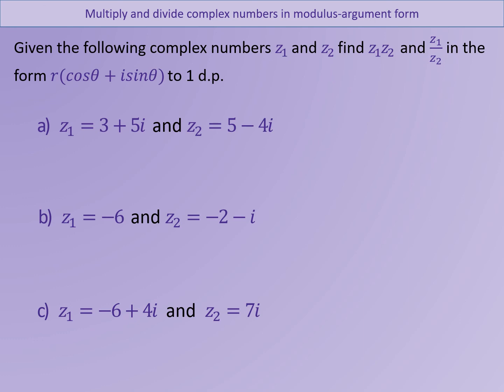For the following pairs of complex numbers, I'd like you to do the same as in the previous example. Find the product Z1·Z2 and Z1 over Z2 in the form R(cos θ + i sin θ). You'll need to find the modulus and argument of each of the two complex numbers and then use the rule to find the modulus and argument of the product and quotient. It's always a good idea to do a sketch on an Argand diagram of the original complex numbers and the product, just to check it looks sensible. Once you've done that, have a look at the next slide with the answers.